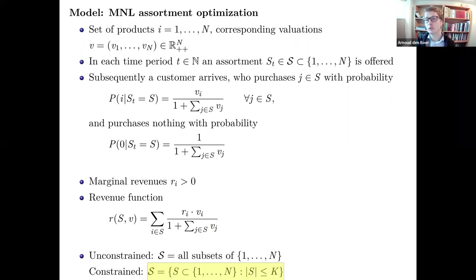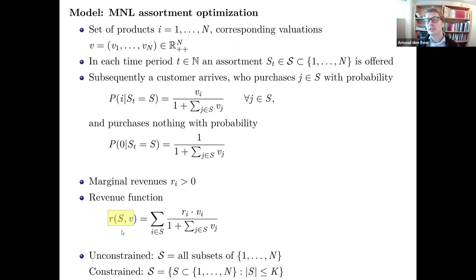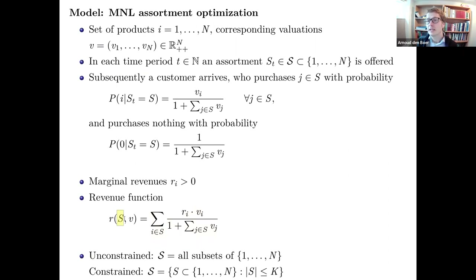There are more complicated constraints — for example, if you offer product one you also want to offer product two. Today we study the simplest variants with and without a capacity constraint k. For the full information case, even though there are 2^N possible sets, the structure is very simple — it reduces to a clean optimization problem.